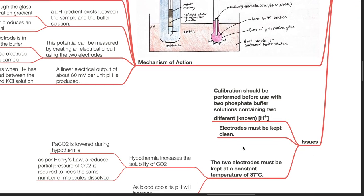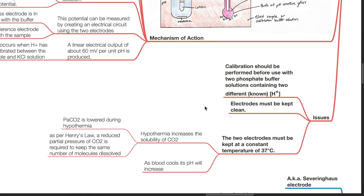Calibration should be performed before use with two phosphate buffer solutions containing two different known hydrogen ion concentrations. The electrodes must be kept clean. The two electrodes must be kept at a constant temperature of 37 degrees Celsius, as hypothermia increases the solubility of carbon dioxide. PaCO2 will be lowered during hypothermia and, as per Henry's law, a reduced partial pressure of carbon dioxide is required to keep the same number of molecules dissolved. As blood cools, its pH will increase.